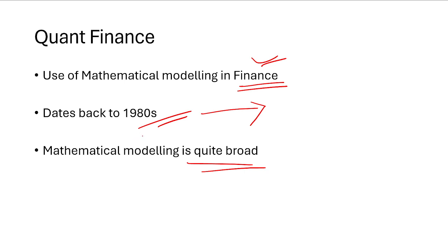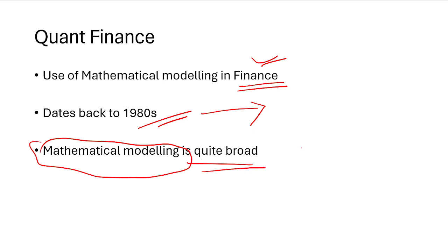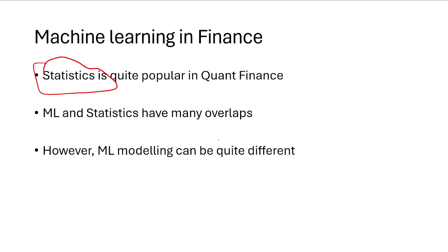Modeling techniques have changed a lot over time, but mathematical modeling is quite broad. It includes statistical modeling, mathematical modeling, simulations, machine learning, AI, econometrics, and concepts from economics like game theory. It's a very broad field with flexibility as to what technique you can use, and machine learning is one of them.